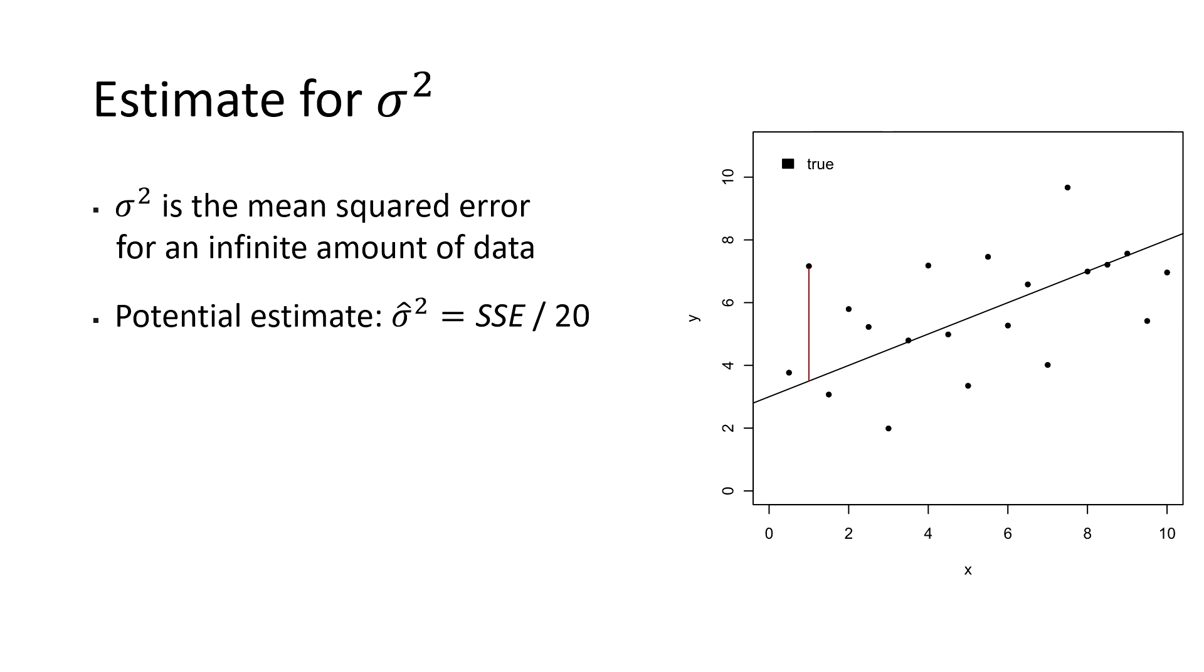Unfortunately, this estimate can only be calculated if we know the true linear relationship, since the errors are the deviation from it. In practice, the true linear relationship is unknown, so that this estimate cannot be calculated. However, we just learned how to estimate the true linear relationship using least squares estimation. And for this example, we obtained the blue line.